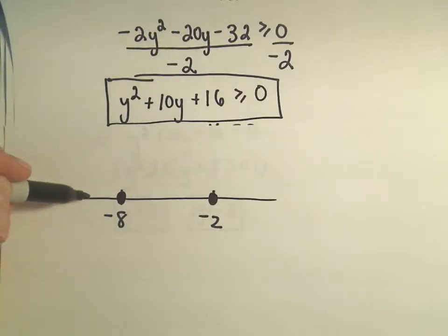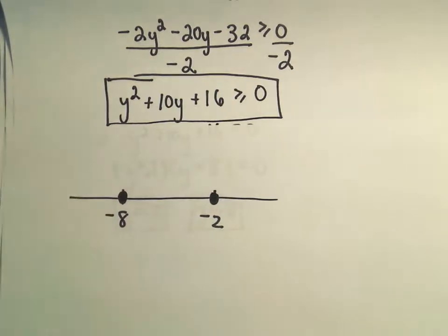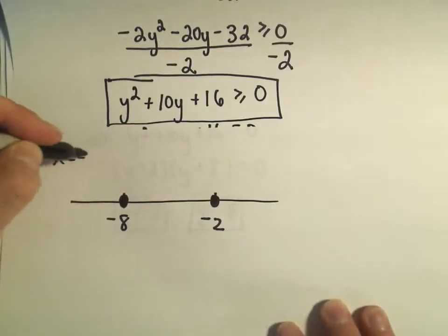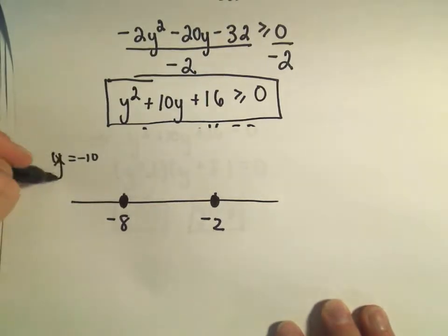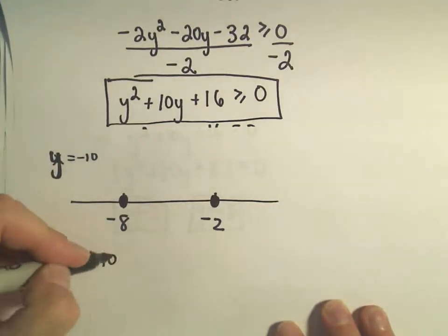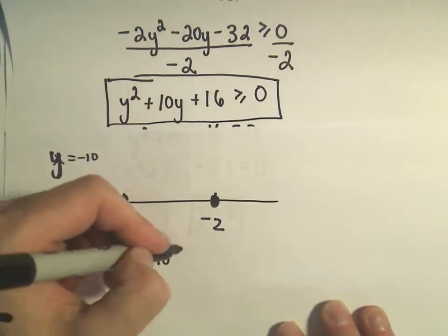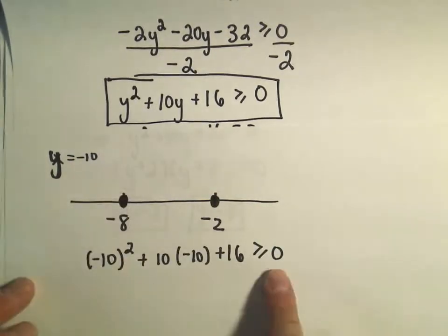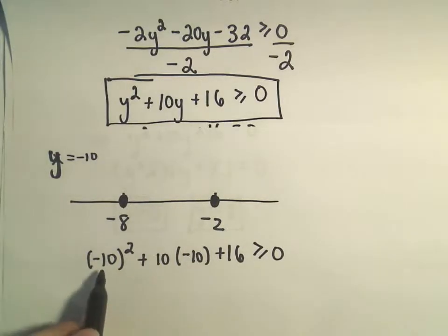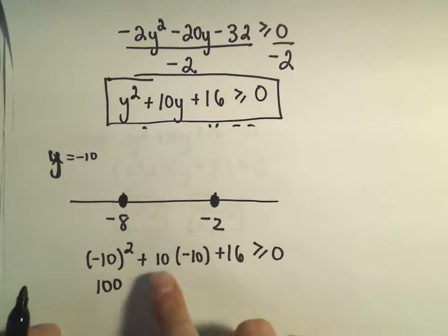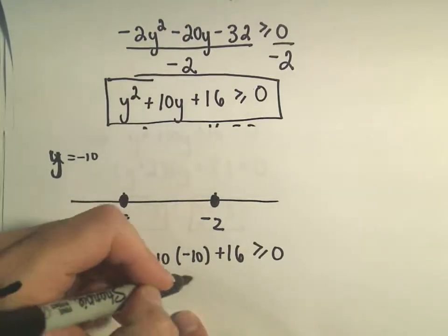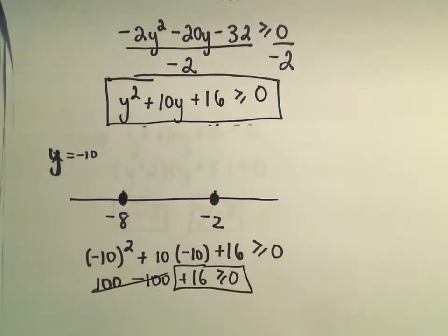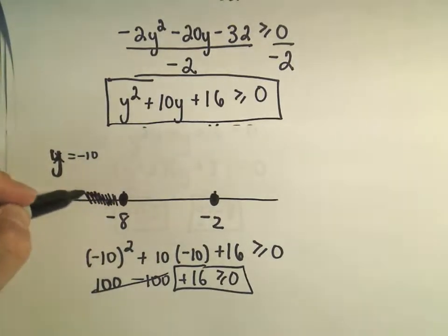Now I have to take a number smaller than negative 8, a number in between negative 8 and negative 2, and a number bigger than negative 2, and test each one in the inequality. I'll try y equals negative 10 first. Plugging in: negative 10 squared plus 10 times negative 10 plus 16. Negative 10 times negative 10 is positive 100; 10 times negative 10 is negative 100, plus 16. The 100 minus 100 cancels out, and 16 is greater than or equal to zero. So every number smaller than negative 8 works.